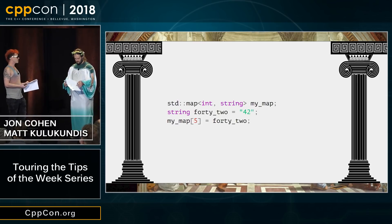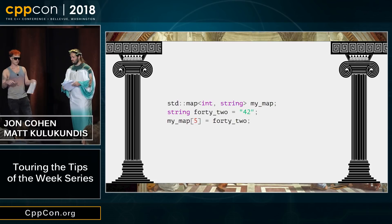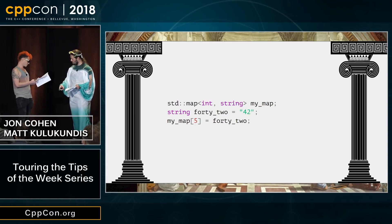I mean, you're making a string, and then you copy it in the map. So the string has a twin.